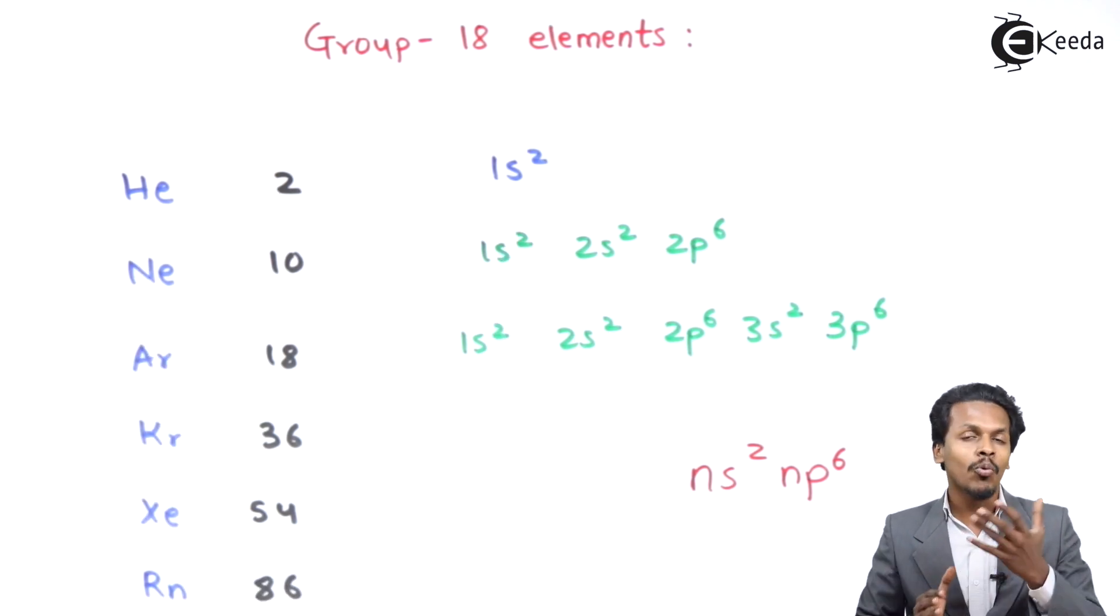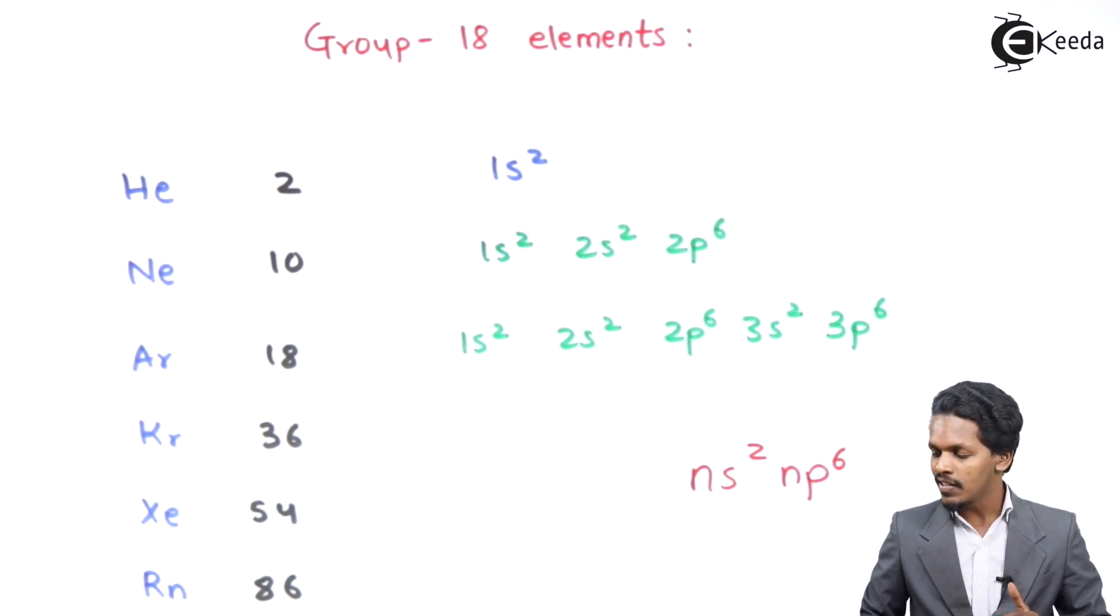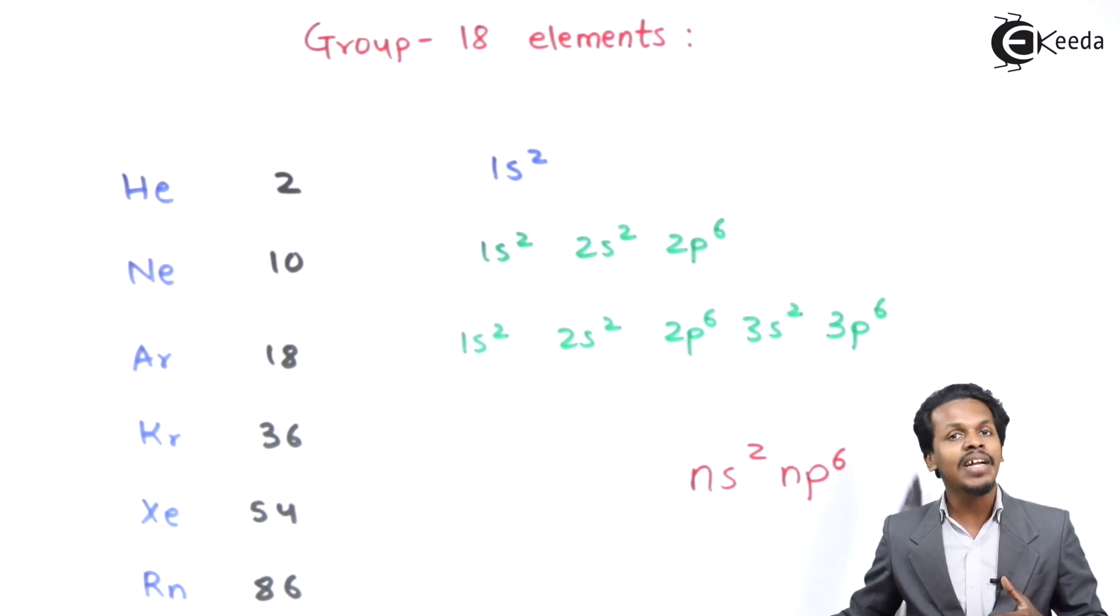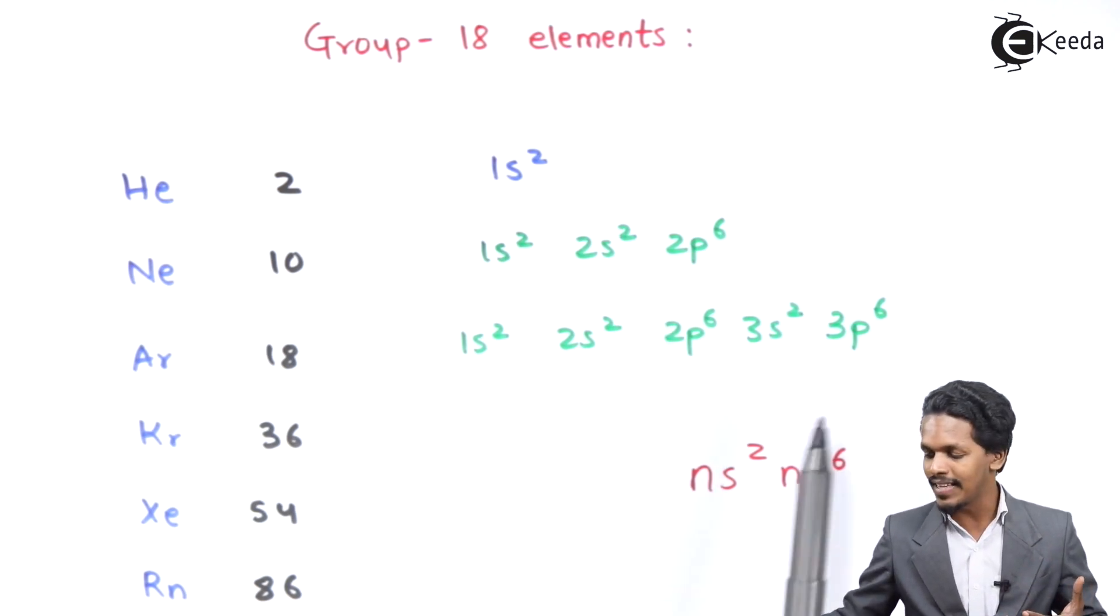And why are they called noble gas elements? The reason behind that is, since we can see that it has been completely octet, we can find that there are 8 electrons in its outermost shell, in this case basically.